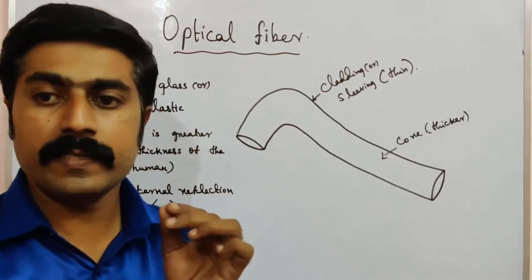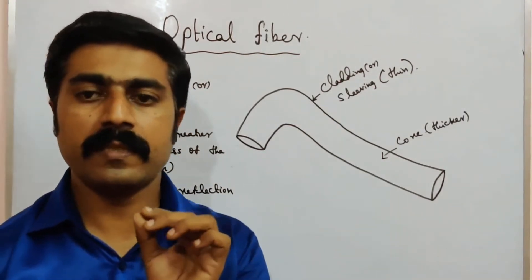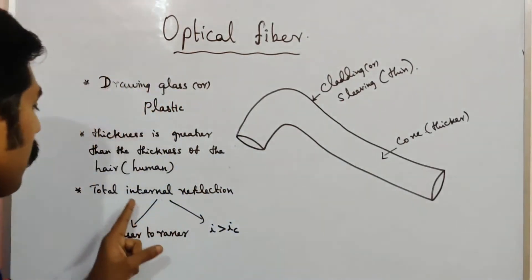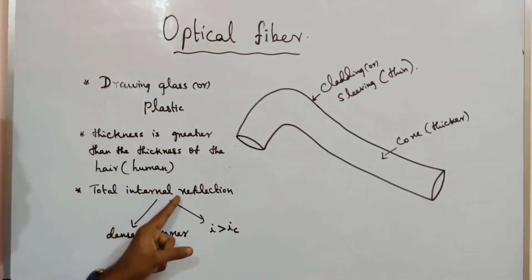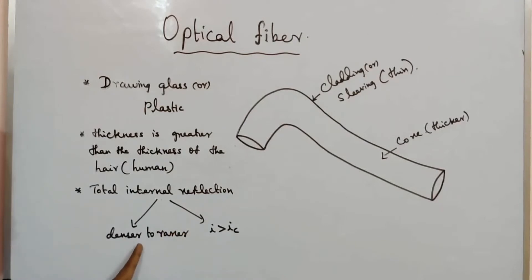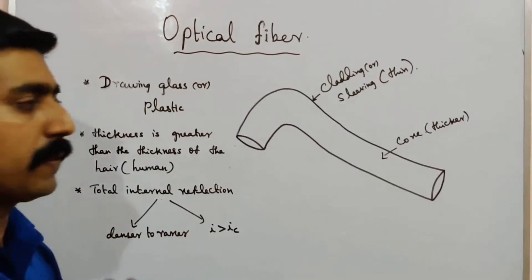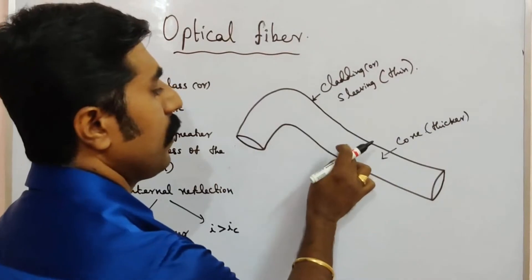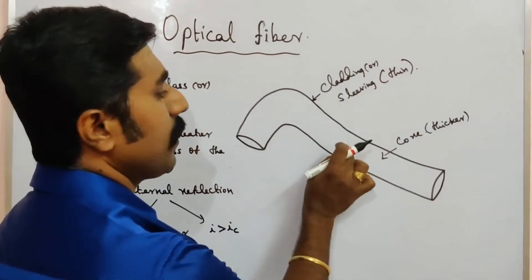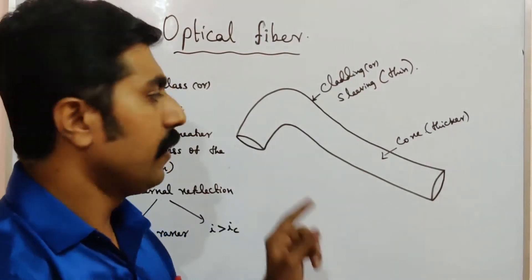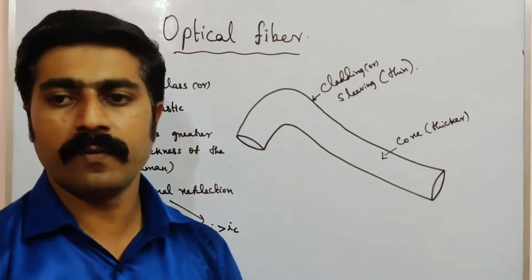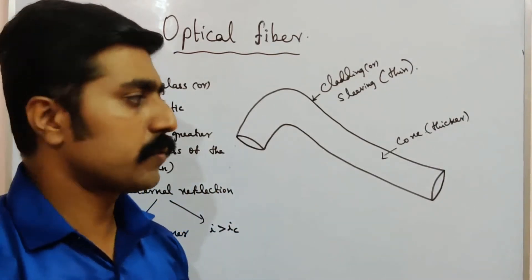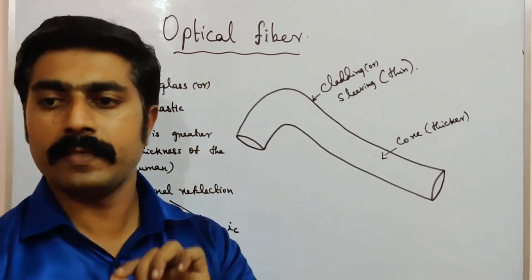The principle is total internal reflection. The light ray travels from denser to rarer medium — the core is denser and the cladding is rarer. The cladding is a transparent material through which light reflects.